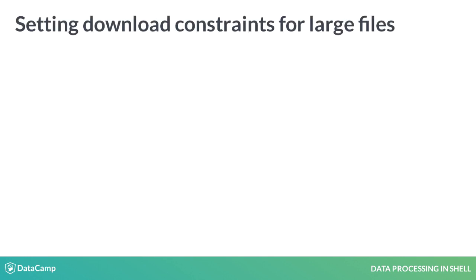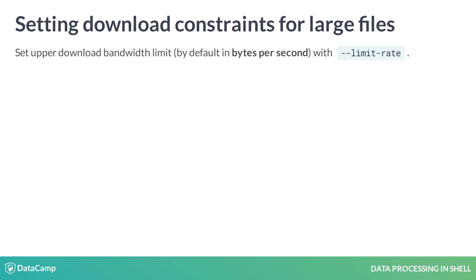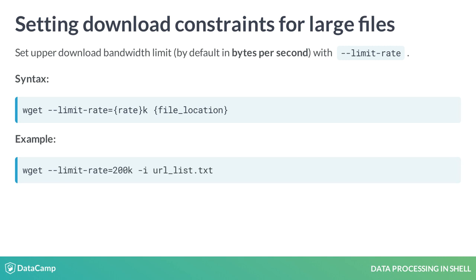Sometimes it's useful to make sure wget does not consume your entire bandwidth with the file download. You can set an upper download bandwidth limit using the --limit-rate option. Set the limit rate equal to a whole number, which will automatically convert to kilobytes per second. For example, wget --limit-rate=200k will make sure your download rate will not exceed 200 kilobytes per second as you download the files saved in the url list.